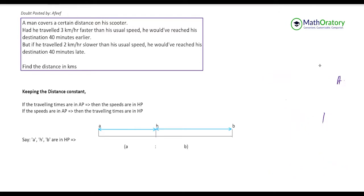Now let's look at the question. A person is traveling 3 km/h faster than usual and reaches the destination 40 minutes earlier. If he travels 2 km/h slower than the usual speed, he reaches the destination 40 minutes late.